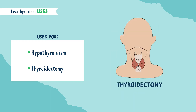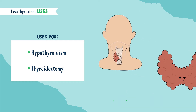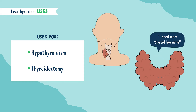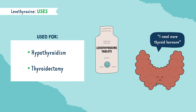Levothyroxine is also used as a hormone replacement after a thyroidectomy. If we break apart that word, 'thyroid' means thyroid gland and 'ectomy' means removal of — so this is removal of all or part of the thyroid gland. These patients suffer from a lack of thyroid hormone, so since they can't get it from their thyroid gland naturally, we use a synthetic form, aka levothyroxine.